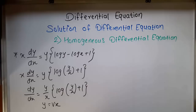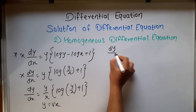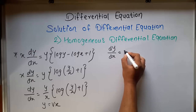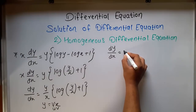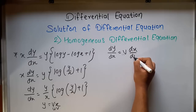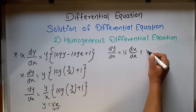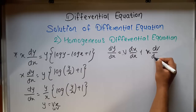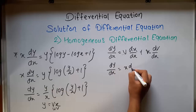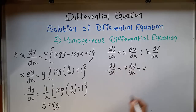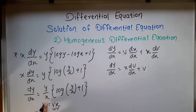So y equal to vx. Differentiating this equation, dy/dx equals — since we have two variables, we use the product rule (u·v rule): dy/dx equal to x dv/dx plus v. In place of dy/dx we substitute this value, and in place of y/x we put v, because v equals y/x.